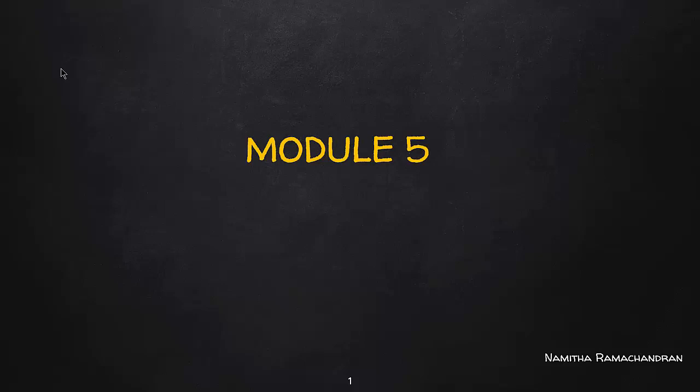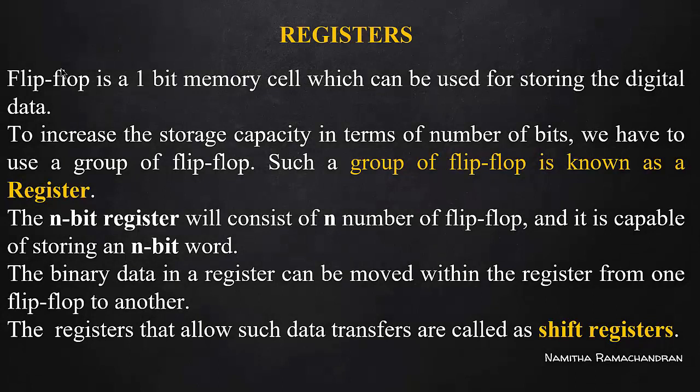Module 5 is important. Let's start with registers in module 5. What do we call registers? We call it a single bit of information storage. We call it n bits of information. We call it n flip-flops in sequence. What is an n-bit register? We call it n flip-flops. A single bit uses a single flip-flop. So we call it registers.